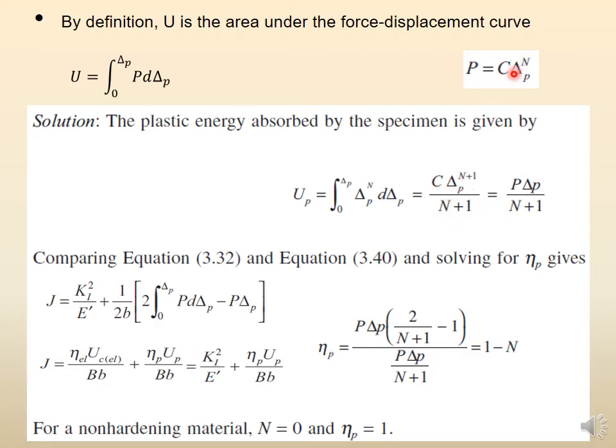Once you get this, then you compare it with this equation, because C Delta_P raised to N times Delta_P equals Delta_P raised to N+1, which means Delta_P raised to N times Delta_P. Therefore this whole thing is 1/(N+1) times P Delta_P. This C Delta_P raised to N is P, and that is multiplied by Delta. So this is a very compact form.